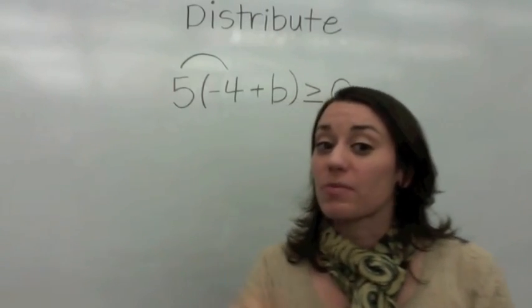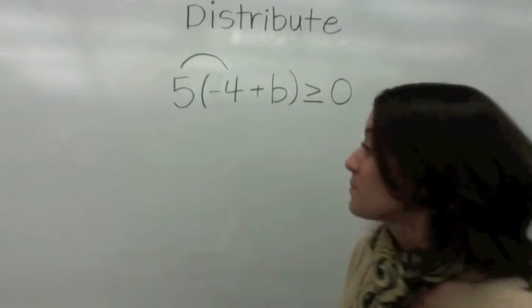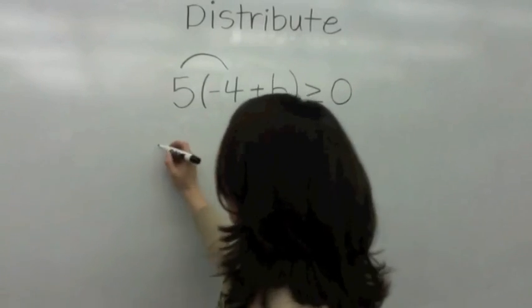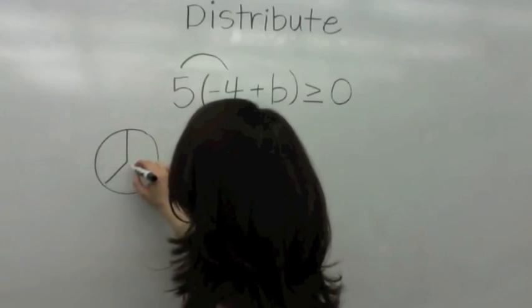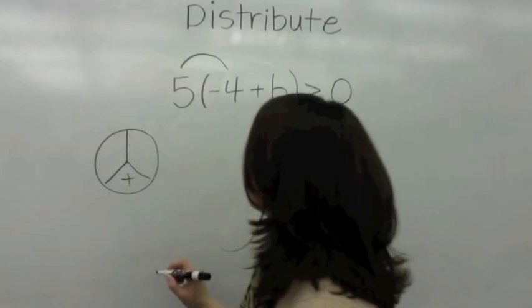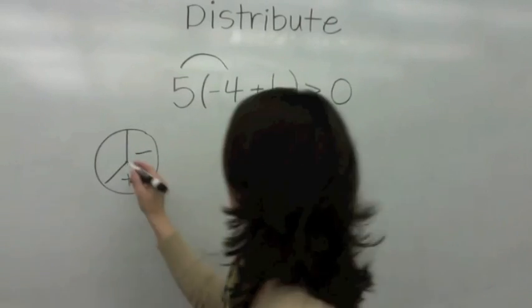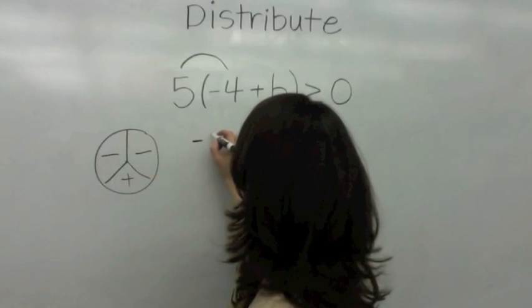What's 5 times 4? Count with me. 5, 10, 15. Right. It's gonna be 20. But as Bob's cousin likes to tell you, he says, a positive 5 times a negative? Oh, that's negative, bro. So that's gonna be negative 20.